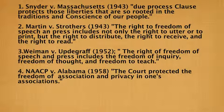Along with Griswold and Connecticut, there were four other cases in the Supreme Court at the time: Snyder vs. Massachusetts, Martin vs. Strotheres, Wayman vs. Updegraaff, and NAACP vs. Alabama. Two and three both deal with freedom of the press and freedom of speech, including the right to distribute, receive, and read anything you wanted to. One and four have to do with the Due Process Clause, which is basically all the rights that citizens in the U.S. are guaranteed.